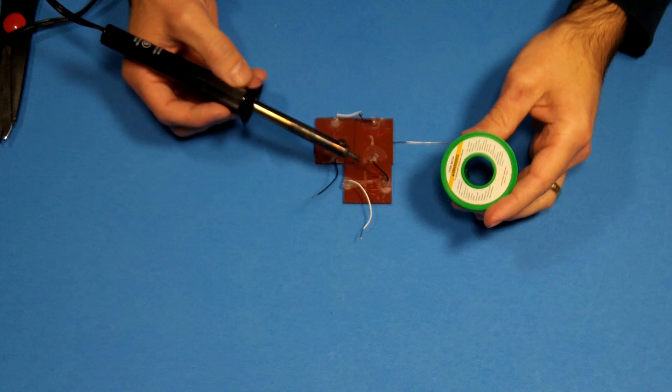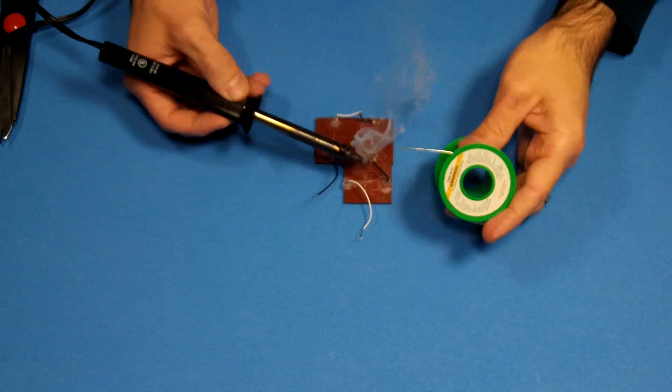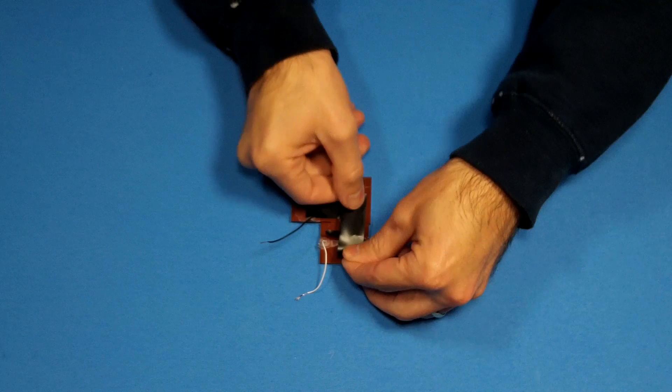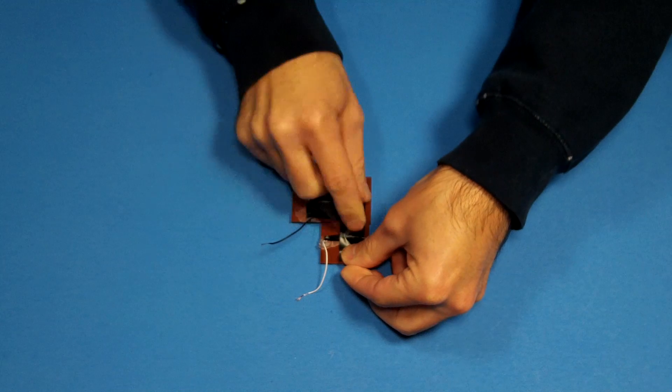Solder your connections and then wrap them in electric tape. Apply electric tape to the back of your panels to protect your wires from being pulled out accidentally.